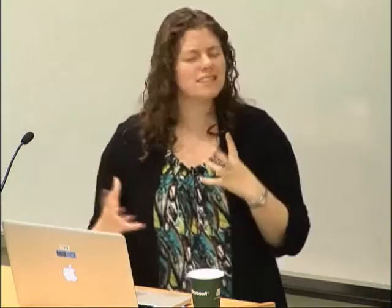Our key insight is that the context of query words in the source code enables skimming, organization of results, and faster feedback for poor queries. We don't claim to automatically correct the developer's query — only they understand their information need — but if we can give them feedback faster so they can more quickly change their query, that's a win. We automatically capture context by generating phrases from the source code, such as 'add new book item,' 'compare playlist file to object,' or 'load history.'